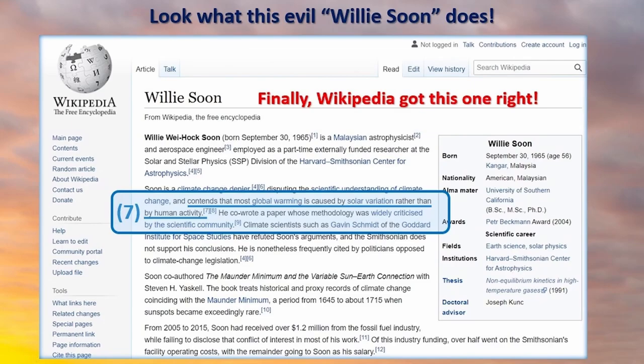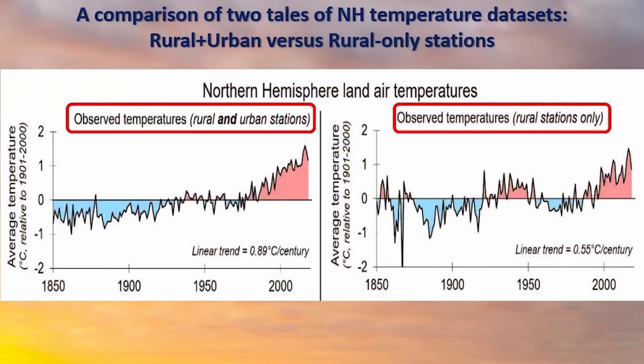Now the last point: I contend that global warming is not caused by CO2 but is caused by the sun. Let me put that statement right. I want to explain this — please, we really have to spend time to look at this graph carefully.